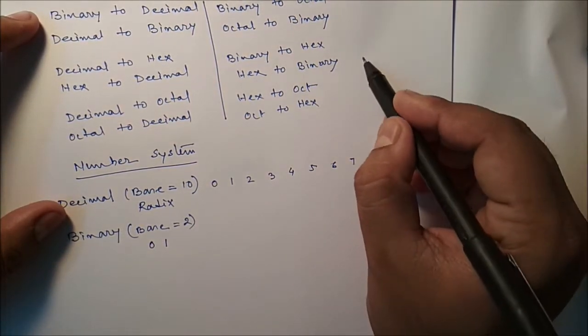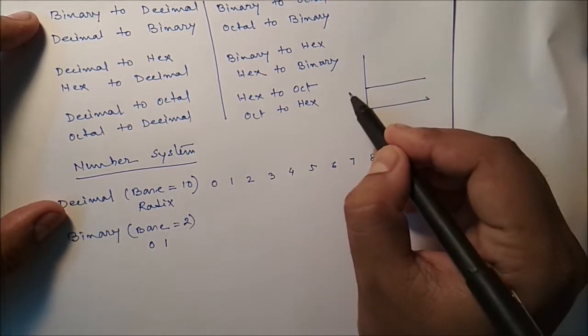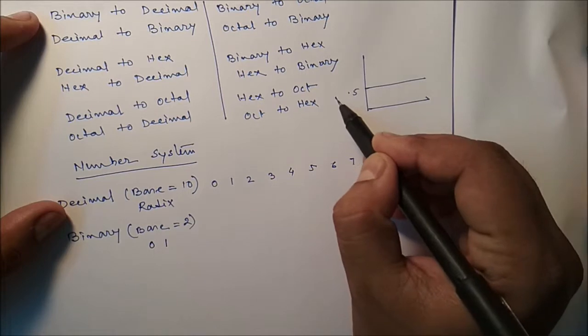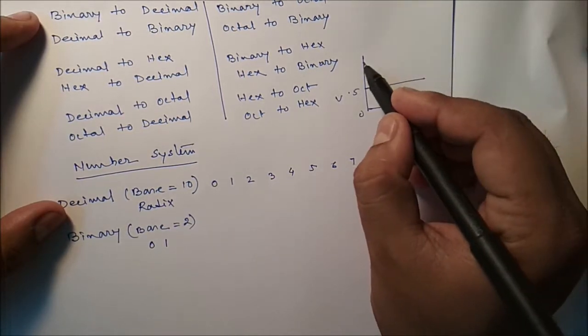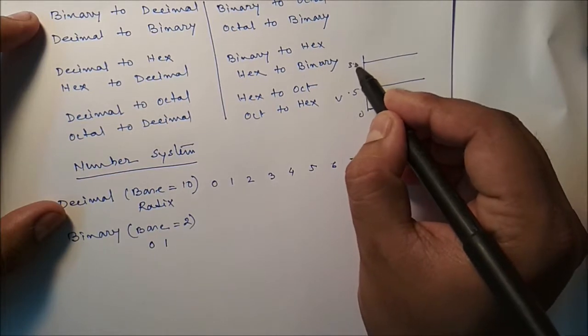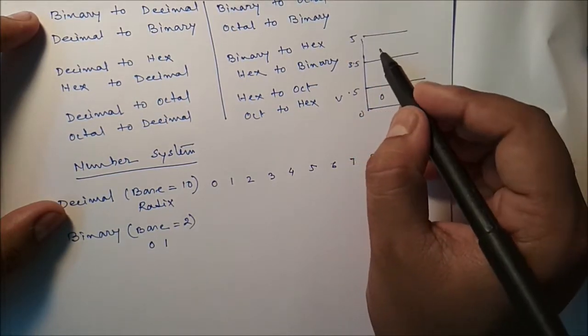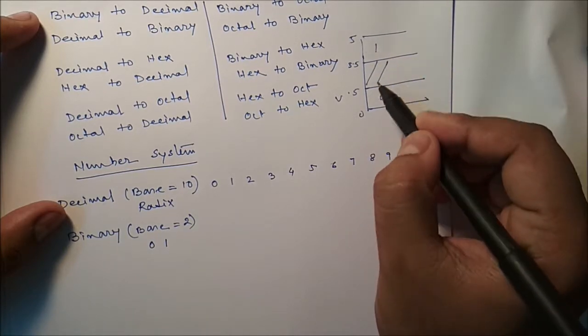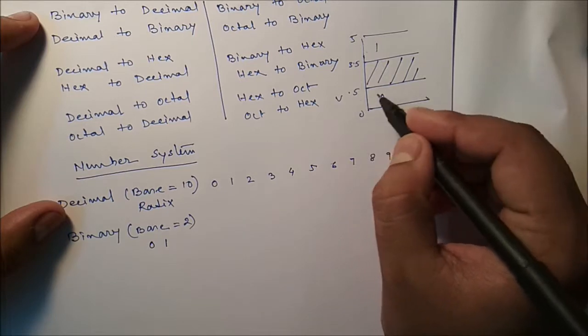So what is the meaning of that? Suppose a voltage is there, if a voltage is in between 0 to 0.5, as of it is 0, or if it is 3.5 volt to 5 volt, as of it is 1. So in between that, we cannot take any decision.